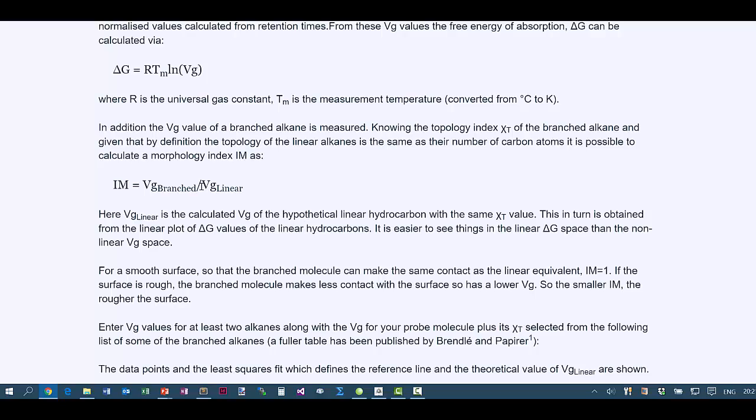What does that mean? You need a topology index Chi T which tells you what effective length that branched alkane is. Once you know the real Vg of a branched alkane and its effective Vg, you can calculate this morphology index which tells you how rough the surface is.